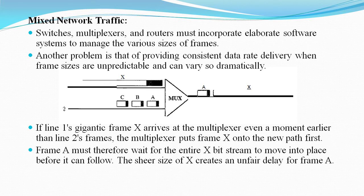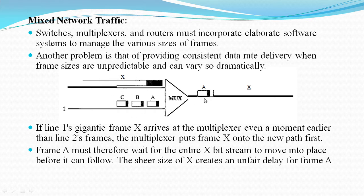To get the most out of broadband technology, traffic must be time division multiplexed onto the shared paths. In the figure shown, if a hypothetical frame X arrives at the multiplexer even a moment earlier than the second frame, the multiplexer puts frame X onto the new path first. After all, even if line 2's frames have priority, the multiplexer has no way of knowing to wait for them and so processes the frame that has arrived. Thus, frame A has to wait for the entire large frame to move into place before it can flow. The same imbalance can affect all the frames from line 2.